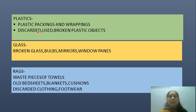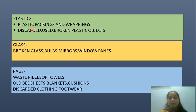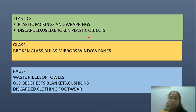Next, we have plastics as a common type of domestic waste. This includes plastic packings — whenever we buy something, we get it in a plastic pack like a cling wrap, and we discard this outer covering. Also, discarded and broken plastic objects: for example, a plastic tiffin that gets broken and is discarded becomes a waste.